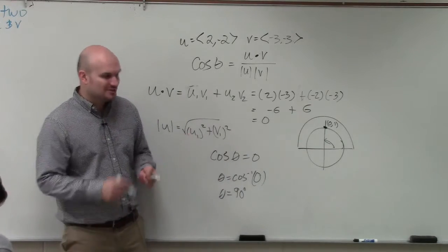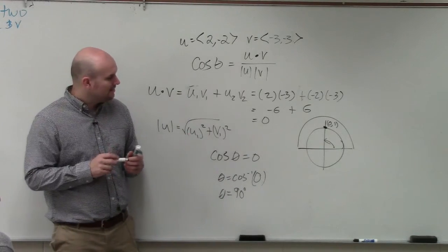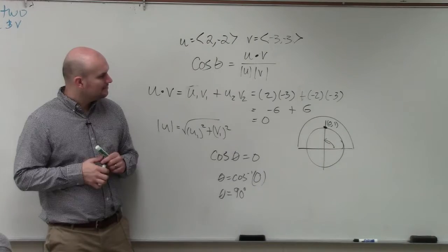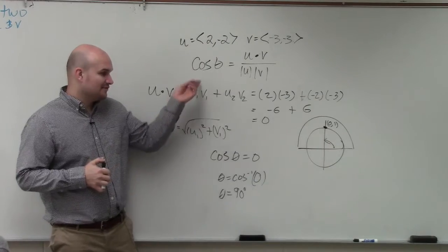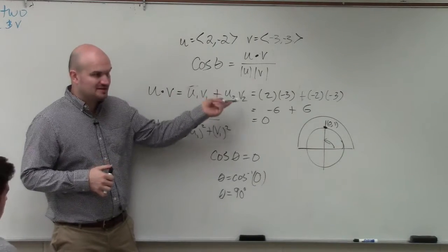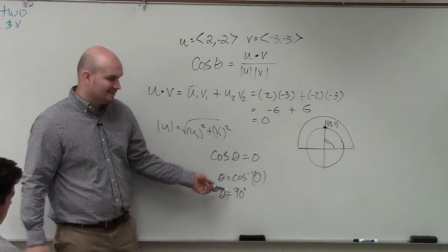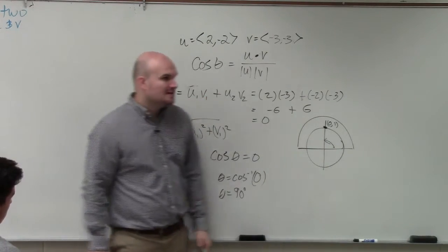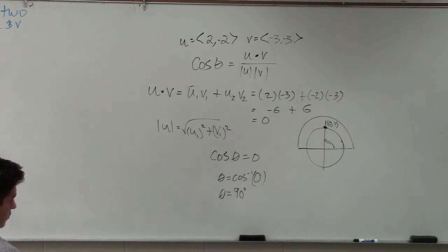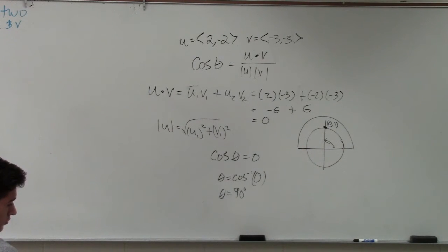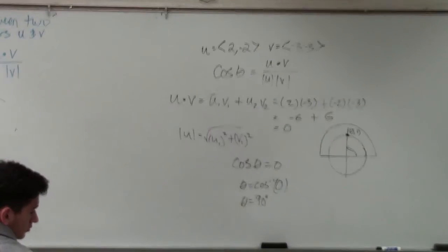Now, that also goes back to our concept. I did the dot product for you, and we figured out it was 90 degrees. Do you guys remember what I called orthogonal angles? Orthogonal angles were angles that were perpendicular. Perpendicular angles are 90 degrees, right?